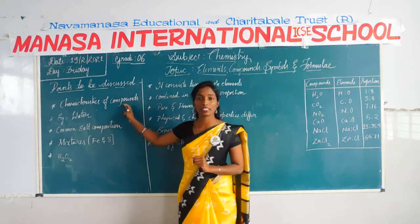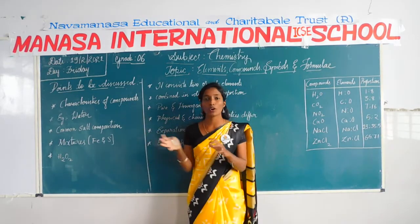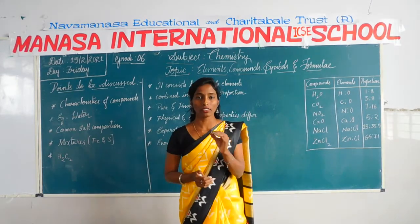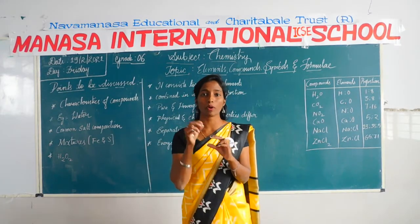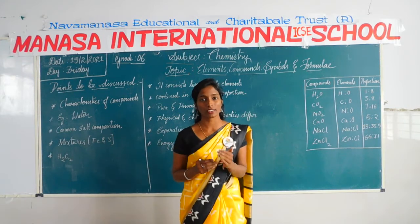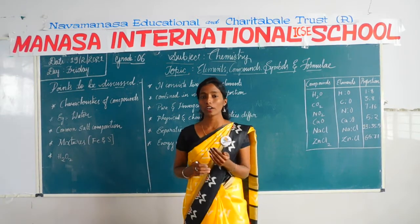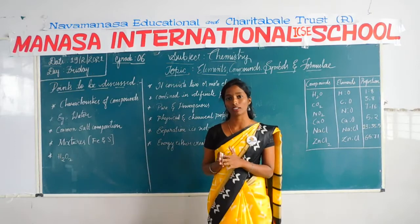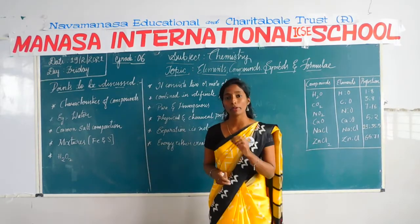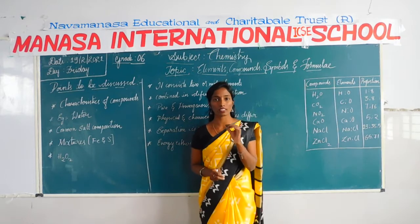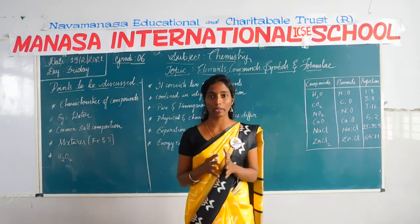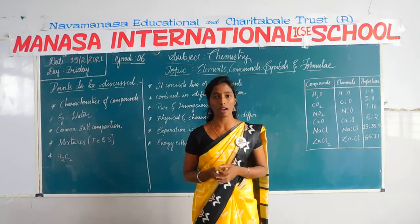First we shall discuss characteristics. What do you mean by characteristics? For having some compound it should contain some properties, that is also called characteristics of its compound. Let us take an example of water to explain all the characteristics of a compound, because water is also called as a compound. First it was named as an element, but later on it was considered as a compound.